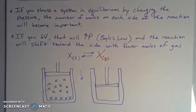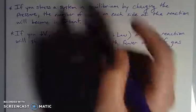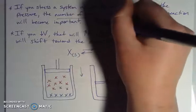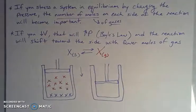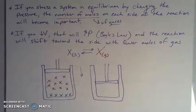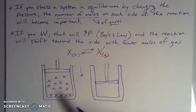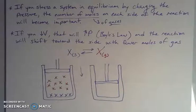If you stress a system in equilibrium by changing the pressure, then the number of moles of gas on each side of the reaction becomes important. Gases spread out, take up a lot of space, and are compressible and expandable. So if I'm giving them less space — decreasing the volume — that's going to increase the pressure. That's Boyle's Law, the inverse relationship between volume and pressure. The reaction will then shift to compensate, moving toward the side with fewer moles of gas.